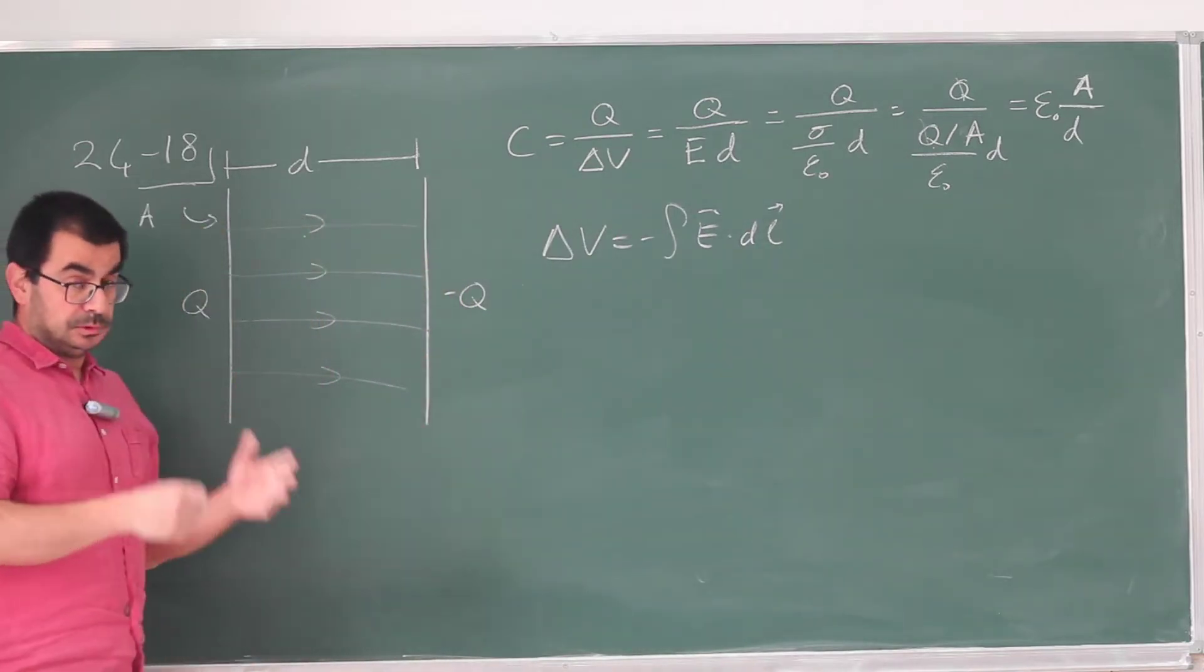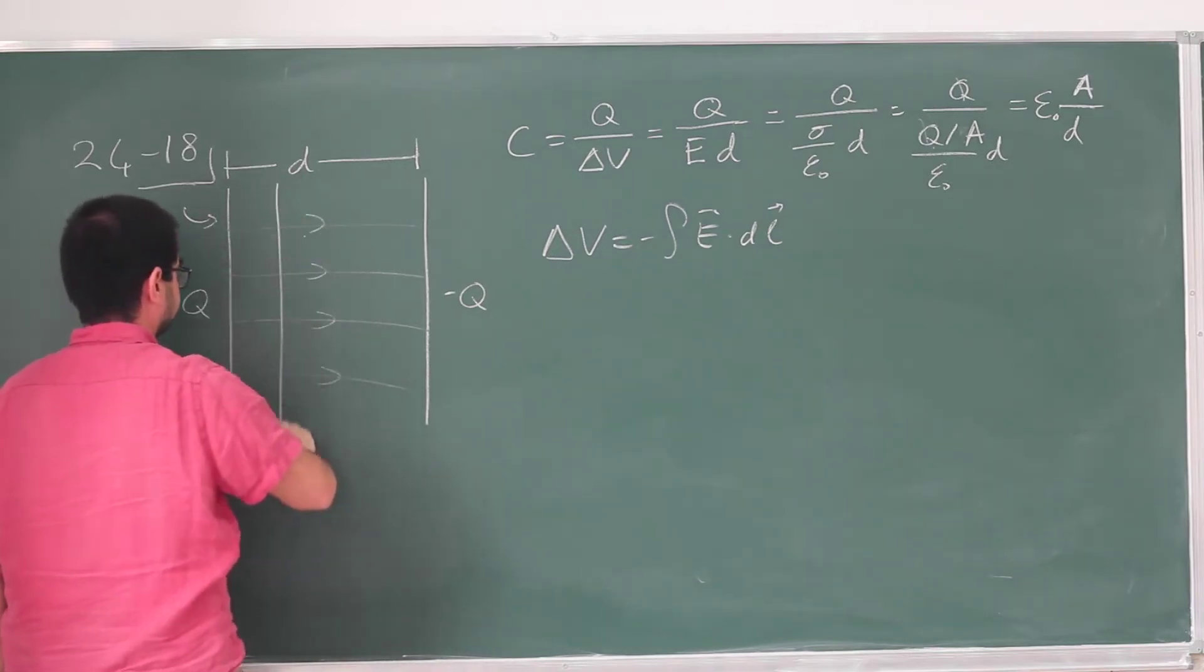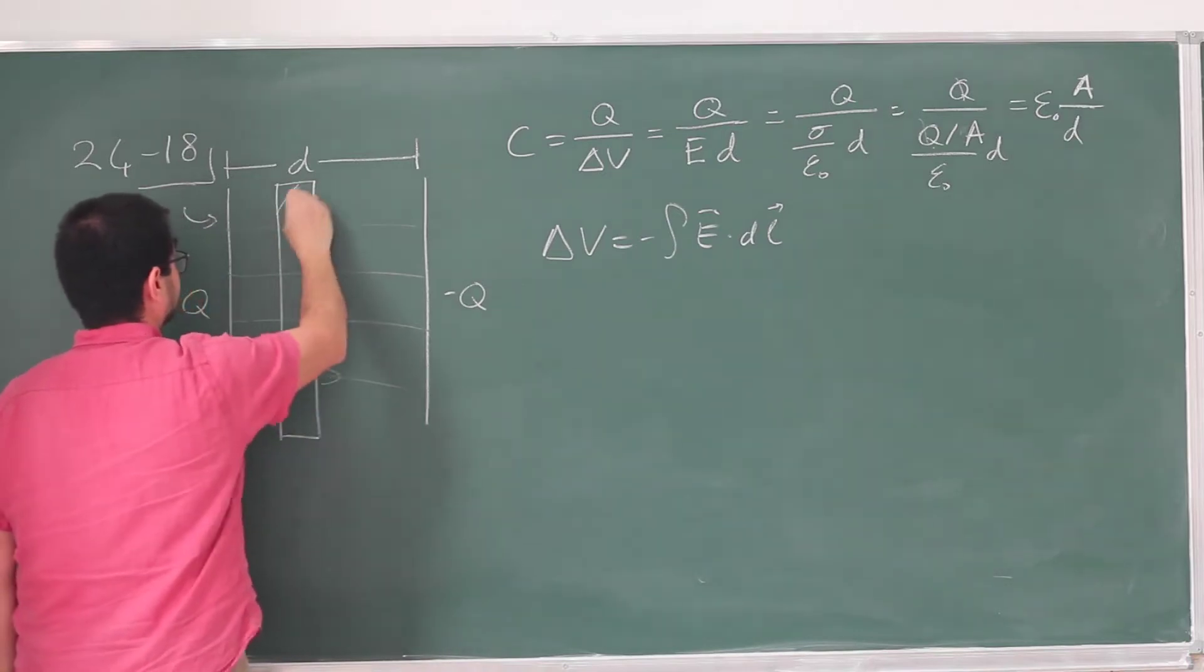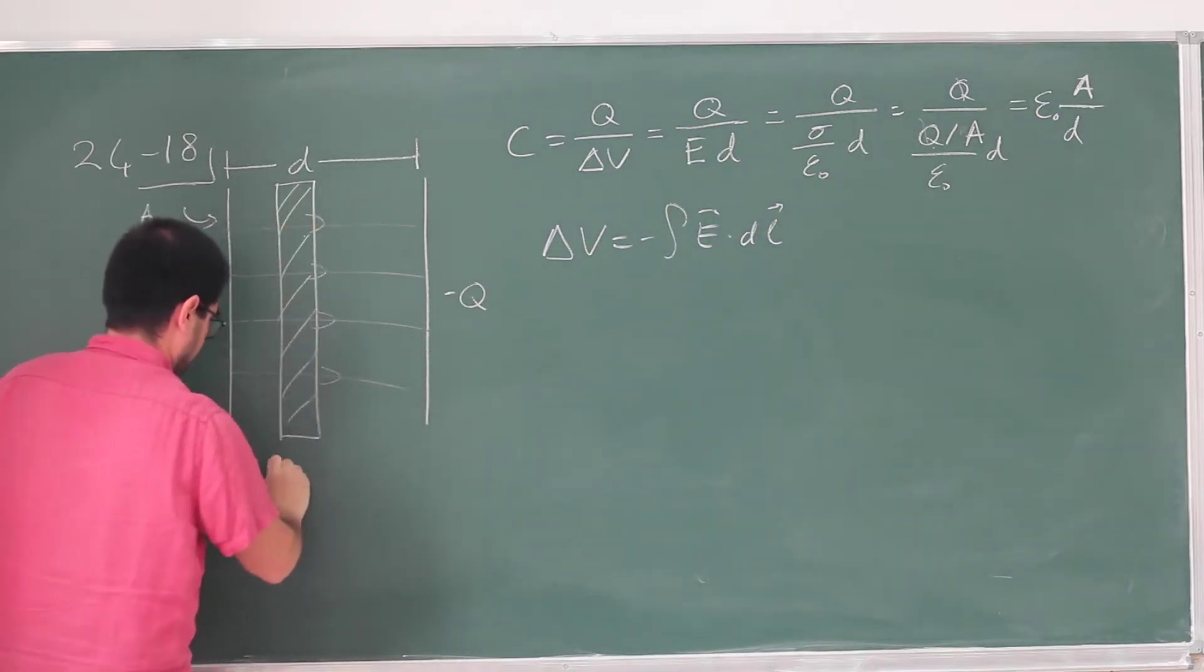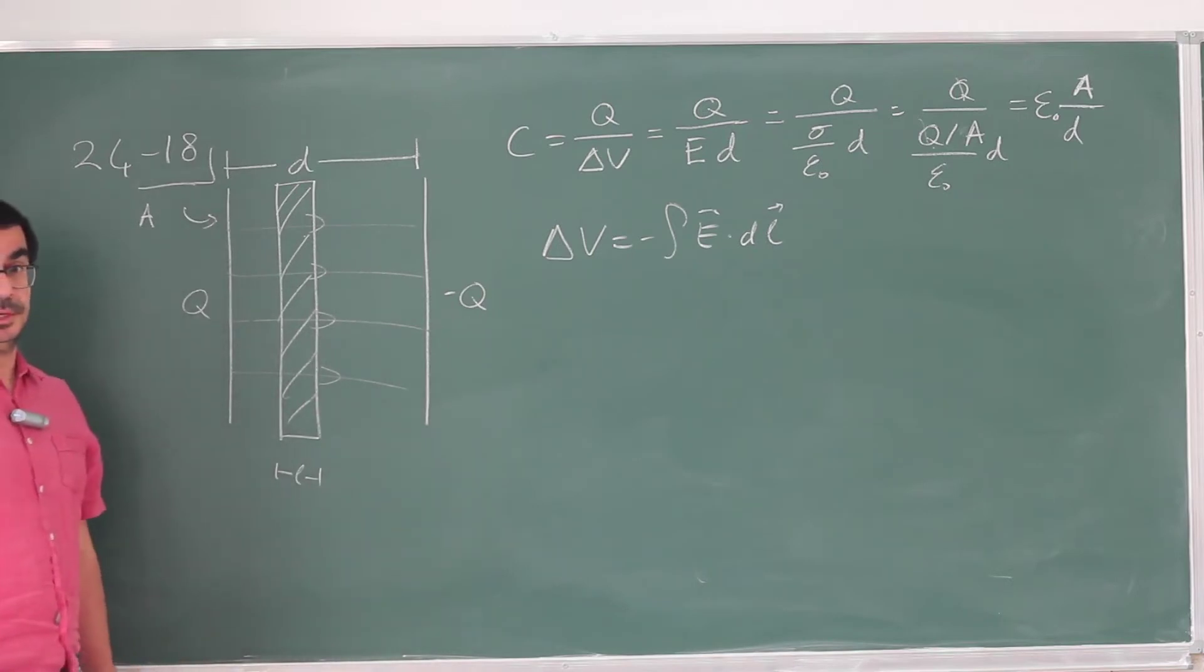Now, the variation they're making in this problem is that they're introducing a conducting slab in between. And this has thickness L, and the question is, what will be the capacitance in this case?